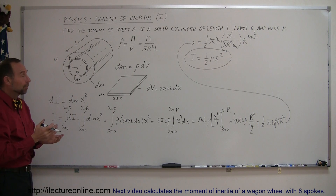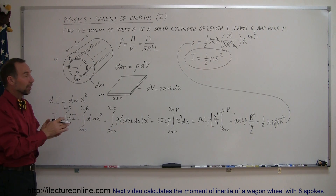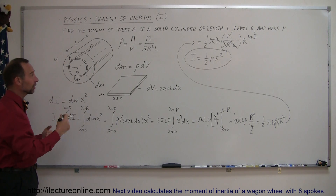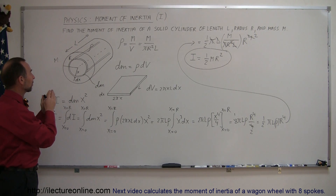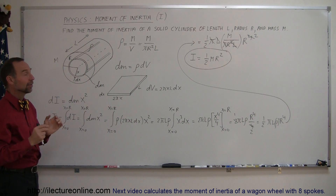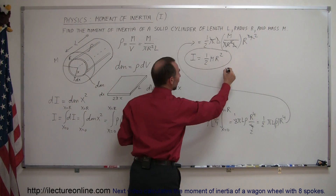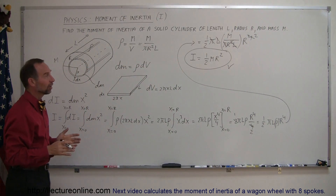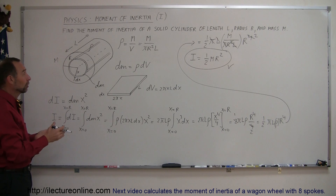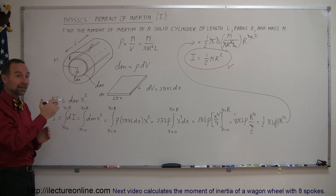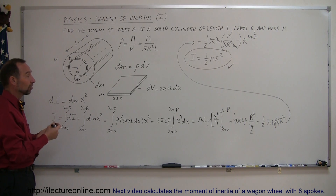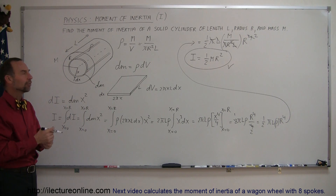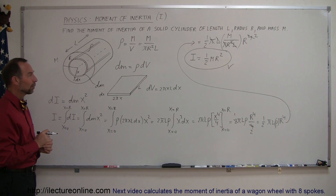Notice that one aspect of the cylinder is missing from the result: the length. It doesn't matter how long the cylinder is — a short or long cylinder makes no difference. The only things that determine the moment of inertia of a cylinder rotating about its central axis are the mass M and the radius R. The next videos will show applications such as kinetic energy of rotating objects and finding moments of inertia for various objects.